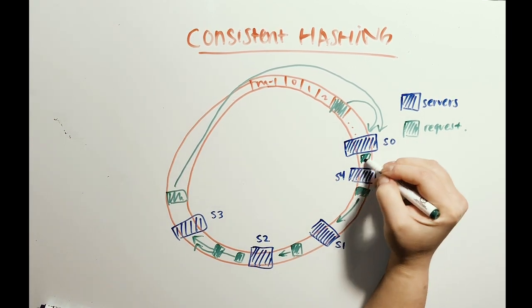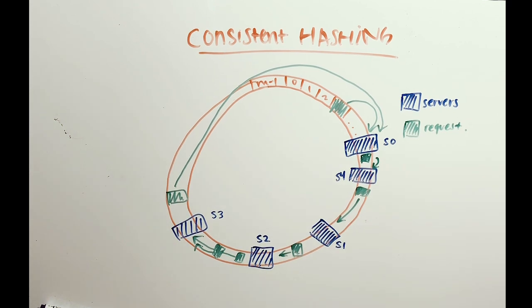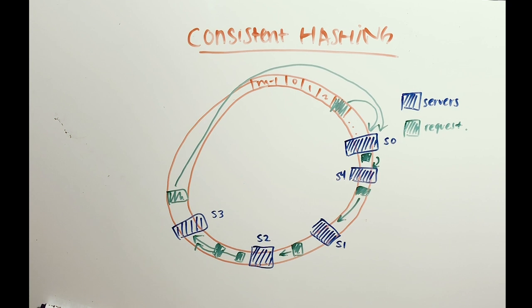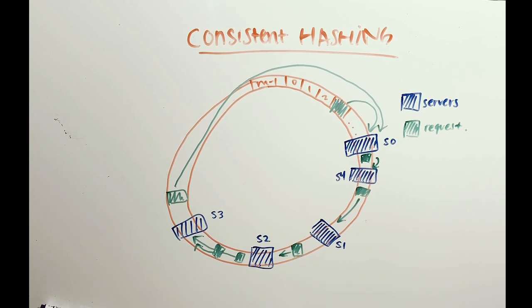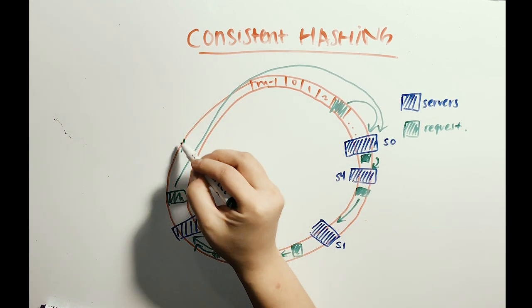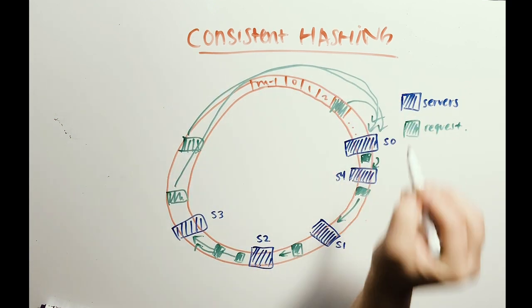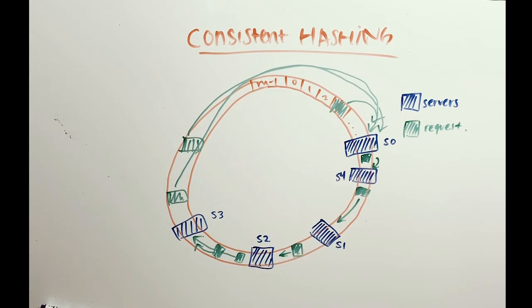The requests that originally went to S1 now go to S4. The other servers are not affected. Because the hashes are uniformly random, we can expect the load to be uniformly random and on average be equally distributed. However, this does not always happen in practice. It's possible to have a very non-uniform distribution between servers. In this diagram, we see most of the requests are being handled by one server, S0.